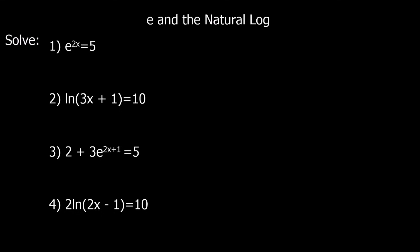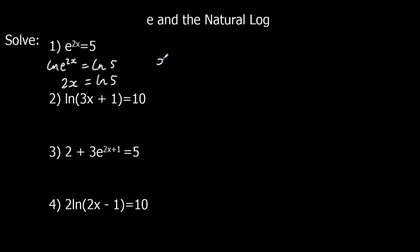First one: e^(2x) = 5. We get rid of e by applying ln to both sides: ln(e^(2x)) = ln 5. ln e cancels, so 2x = ln 5. Then divide both sides by 2: x = ln 5 over 2.